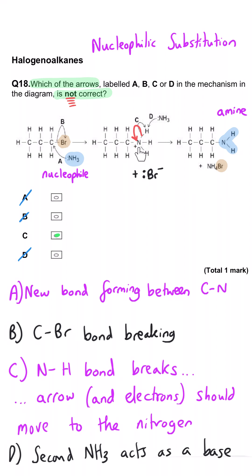We want to restore the lone pair on the nitrogen and make its charge neutral. And so C is the incorrect arrow.